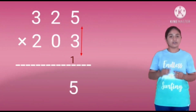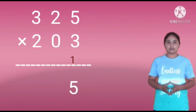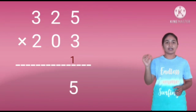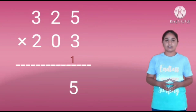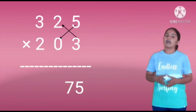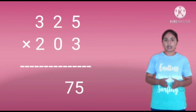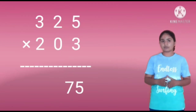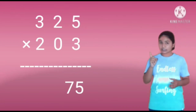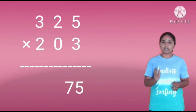We have to multiply the unit digits. That is 5 into 3 equals 15. So, write the 5 in the units place and keep 1 as carry. Next, we have to do cross multiplication of 2 into 3 and 5 into 0. It will be 6 and 0. Add these numbers, we will get 6. The carry is left over, so add the carry to 6. It will be 7. Write the 7 in the 10s place.